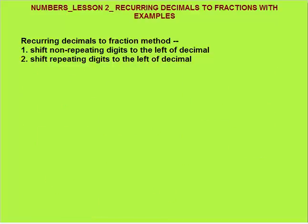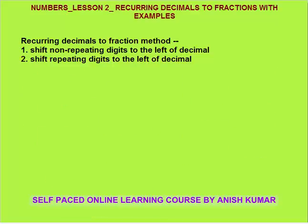Now, the method for converting recurring decimals to fractions: Step 1 is to shift the non-repeating digits to the left of the decimal. Step 2 is to shift the repeating digits to the left of the decimal. After simple calculation, you will get your answer.